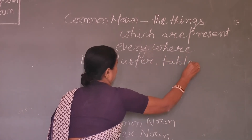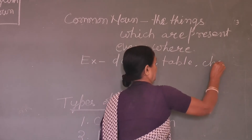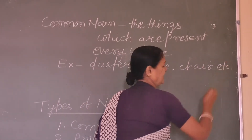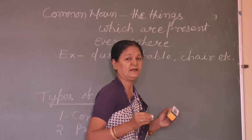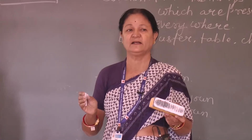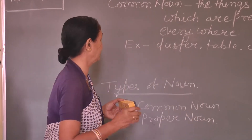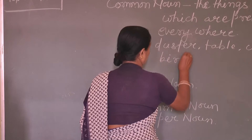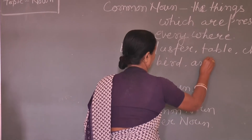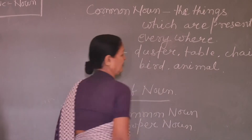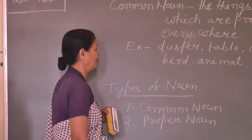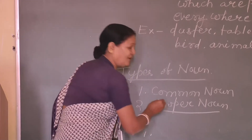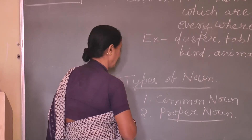Duster, table, chair, etc. Bird is also common — when we see different types of birds it is also coming under common noun. Bird, animal — these are also common noun.